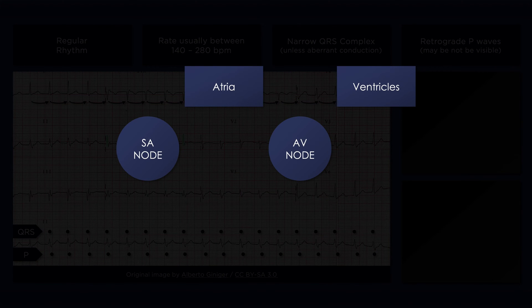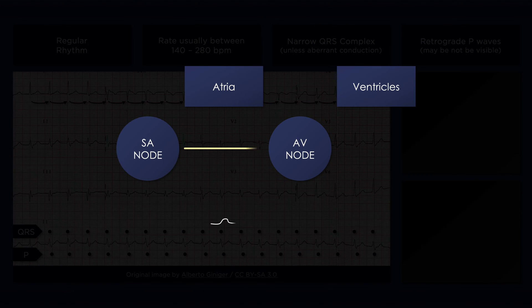Now let's briefly take a look at what happens during normal conduction of an electrical impulse through the heart and what happens during typical AVNRT. Normally, an electrical impulse will start in the SA node, spread through the atria to the AV node, and then finally enter the ventricles.